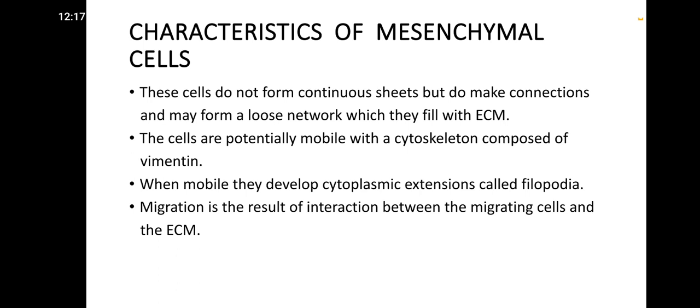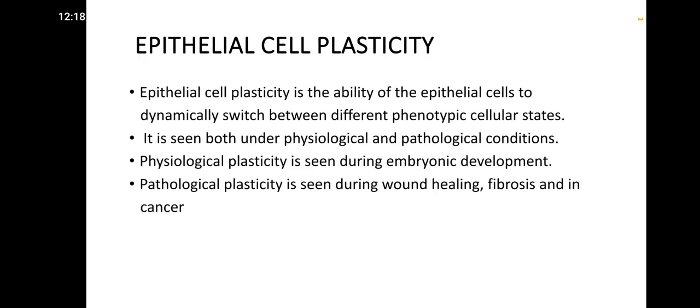Mesenchymal cells do not form continuous sheets but may form a loose network filled with extracellular matrix. The cells are potentially mobile with a cytoskeleton composed of vimentin. When mobile, they develop cytoplasmic extensions called filopodia. Migration is the result of interaction between the migrating cells and the extracellular matrix.